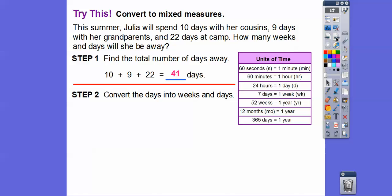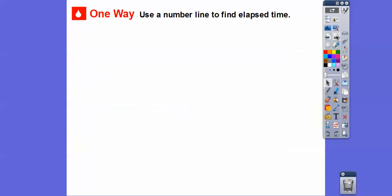Now we're going to convert those 41 days into weeks and days. We're going to take that and divide it by 7. So 41 divided by 7. I know 7 times 5 is 35. When we subtract, we get 6. This is our remainder. So that's how many days and weeks there are. 5 weeks and 6 days. Julia will be away for 5 weeks and 6 days.